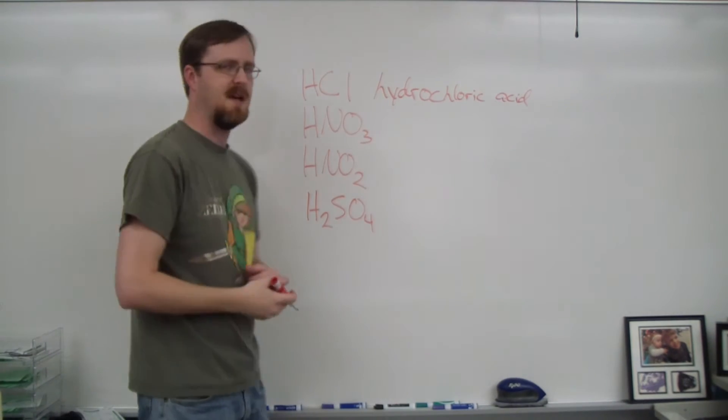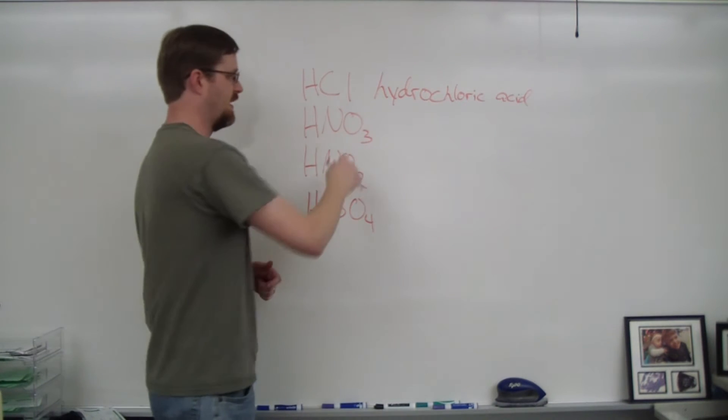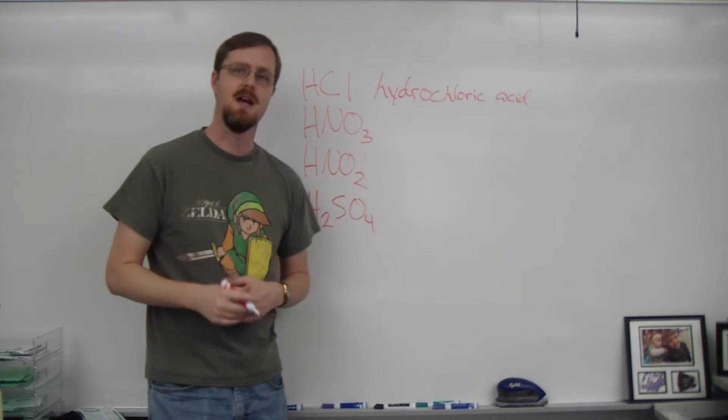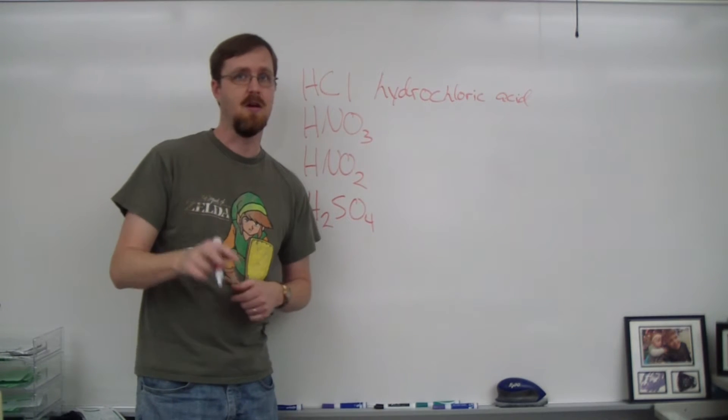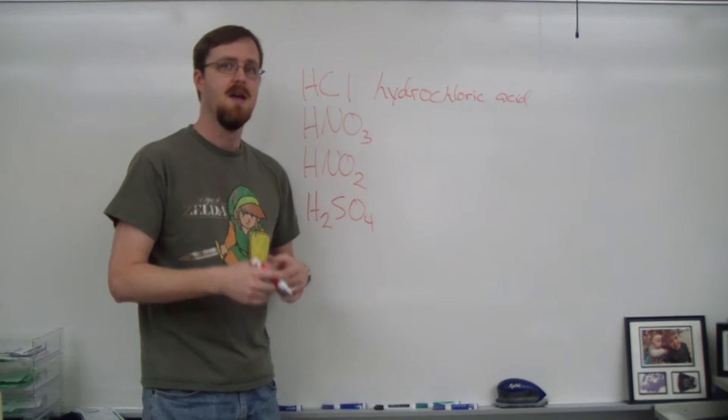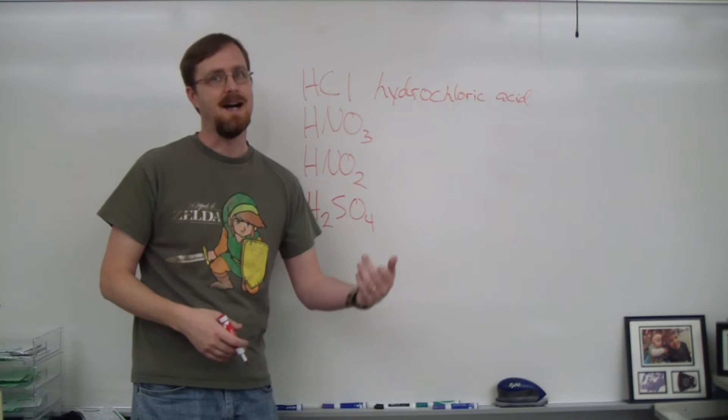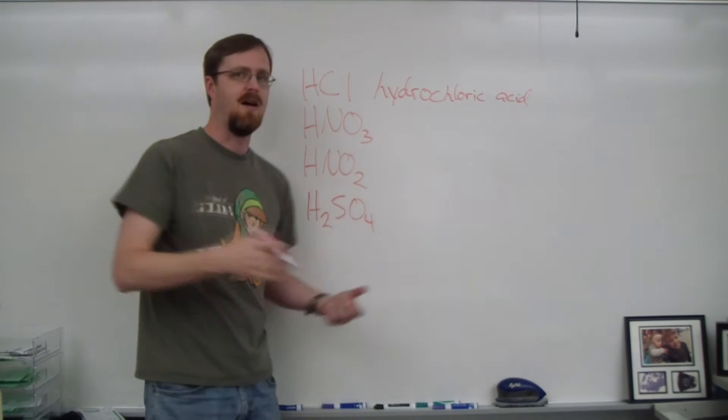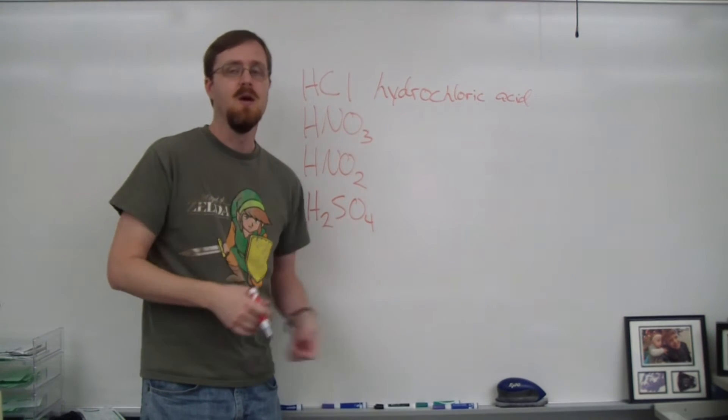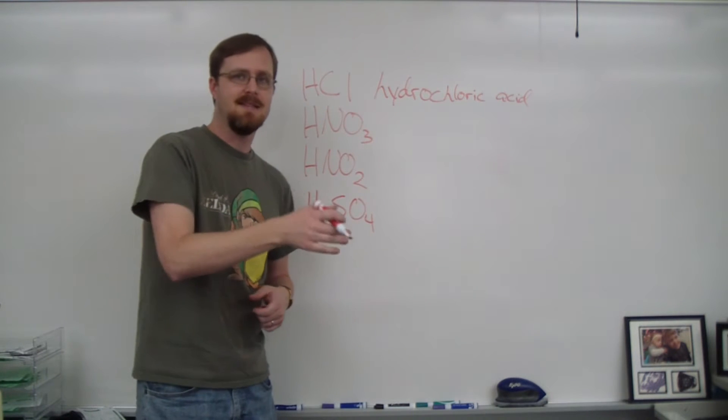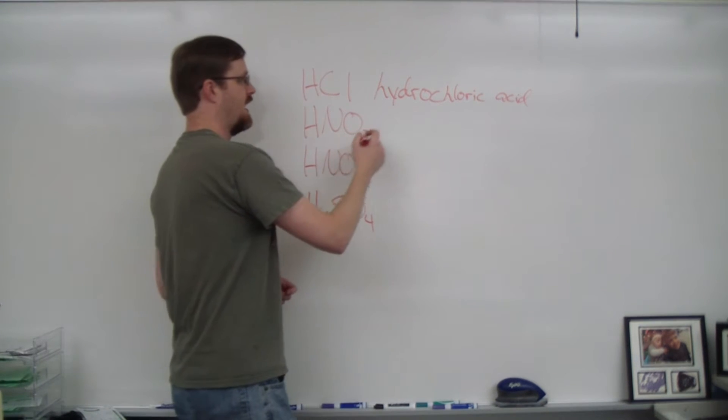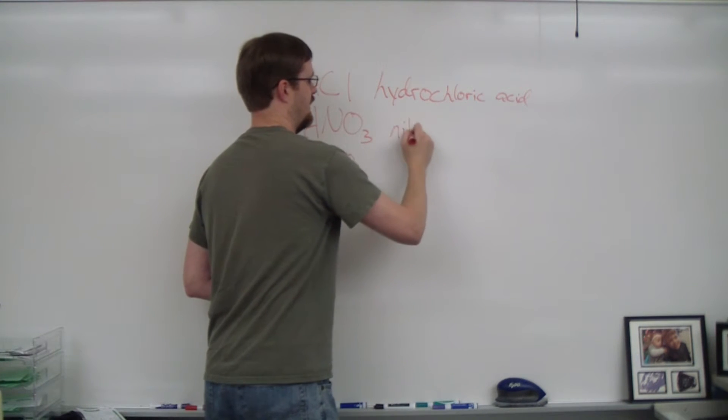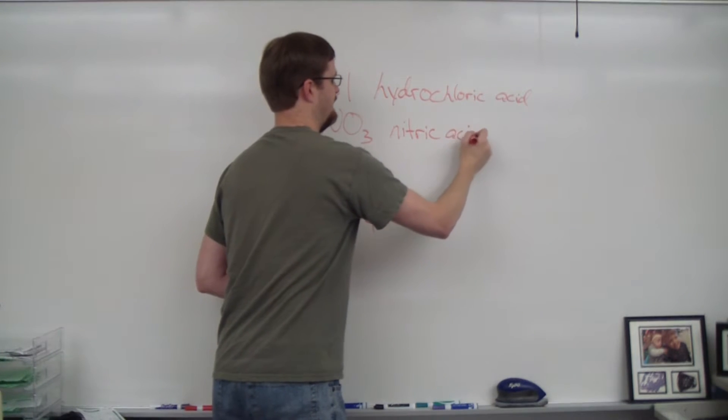Now this is an example of a polyatomic acid because we have a polyatomic ion, nitrate. Now within the polyatomic acids, there are two different kinds. There are the Ate and the ites. Nitrate obviously is an Ate, which becomes Ic. So instead of nitrate, this is nitric acid.